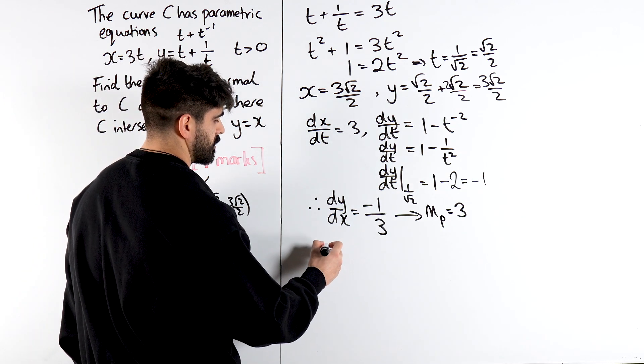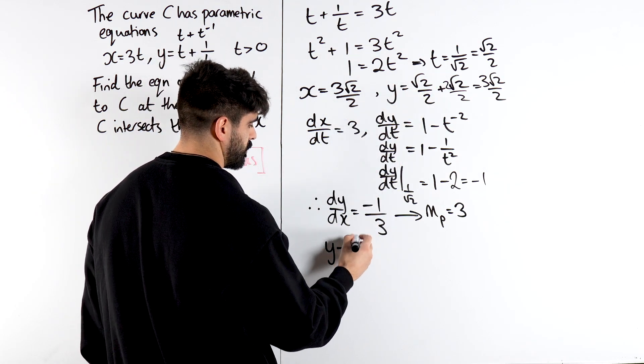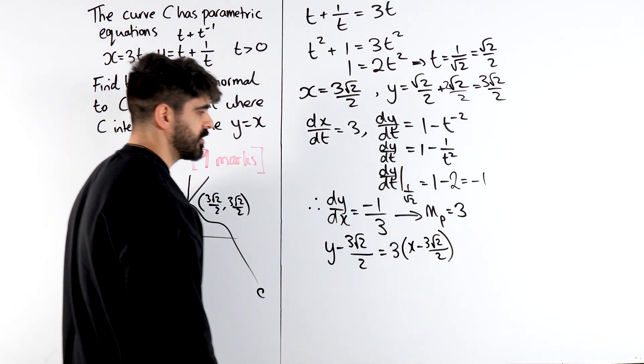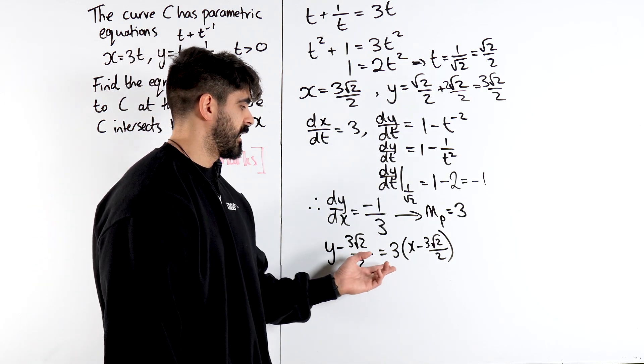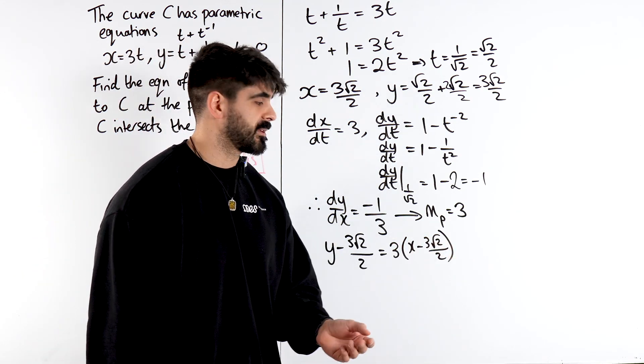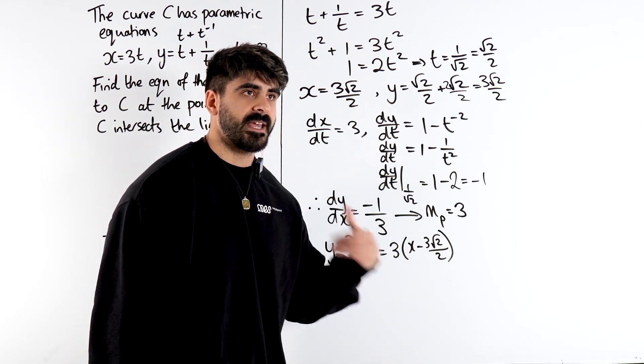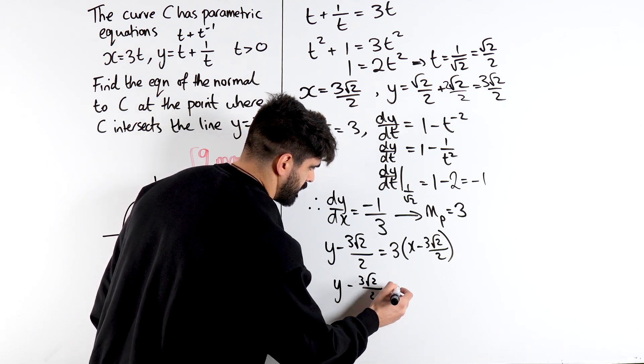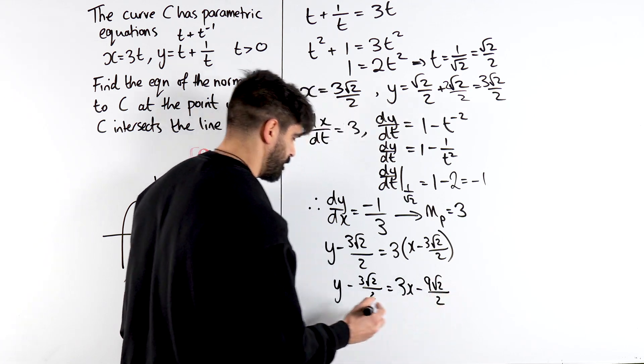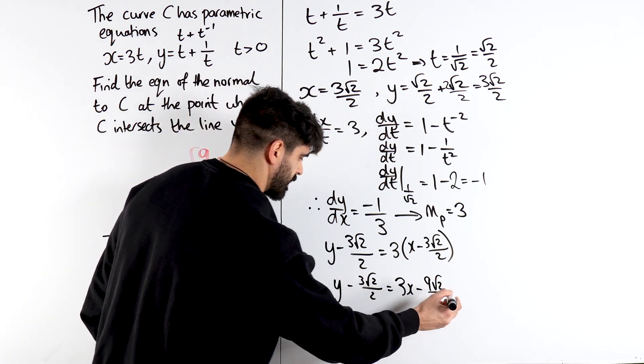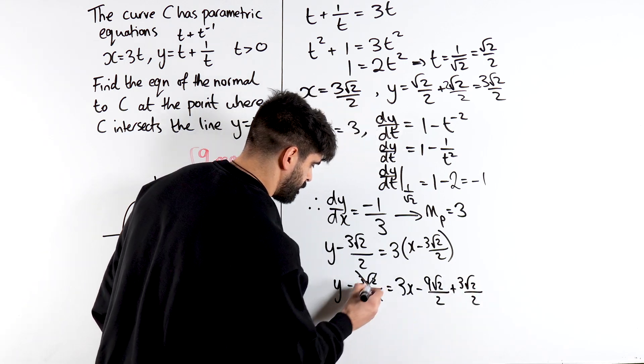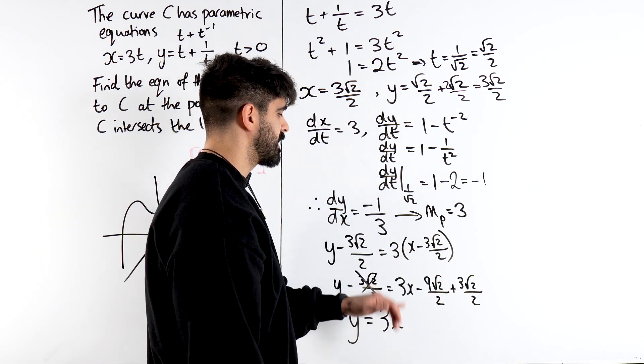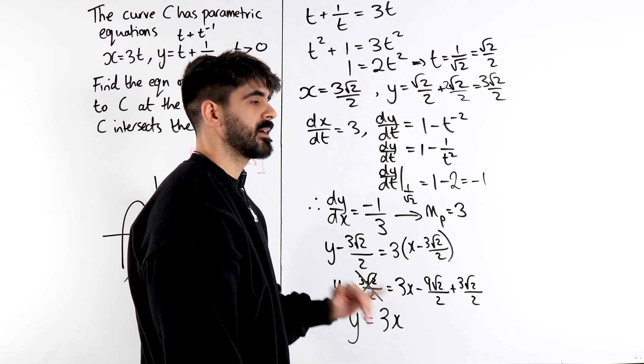Now we just do y minus y1. So we're going to do y minus the y coordinate, which was 3 root 2 over 2, is the gradient x minus the same thing. Now they don't give you the form that they want it in, so I usually say, if that's an integer, just expand, do y equals mx plus c. If that's a fraction, do ax plus by plus c is 0. So just expand that, so you get y minus 3 root 2 over 2 is 3x minus 9 root 2 over 2, and then we add that over. By adding that over, we're going to get plus 3 root 2 over 2. So there we're going to get our answer y is 3x. Then we get minus 9 plus 3. Minus 9 plus 3 is minus 6. Minus 6 divided by 2 is minus 3 root 2.